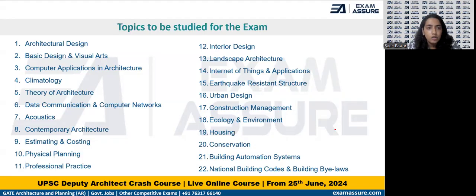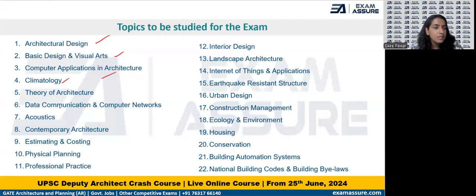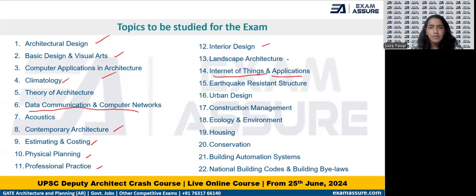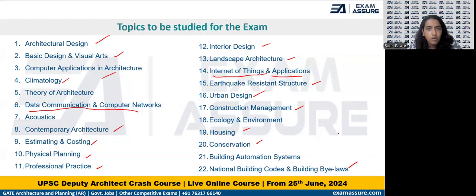In the notification that UPSC issued, they've mentioned topics ranging from architectural design to basic design, computer applications, and climatology. New topics that have been introduced include data communication and networks, computer networks, and Internet of Things and its applications. Other topics include contemporary architecture, estimation, physical planning, professional practice, interior design, landscape, urban design, earthquake-resistant structures, construction management, conservation, housing, building bylaws, and the National Building Code — very, very important.